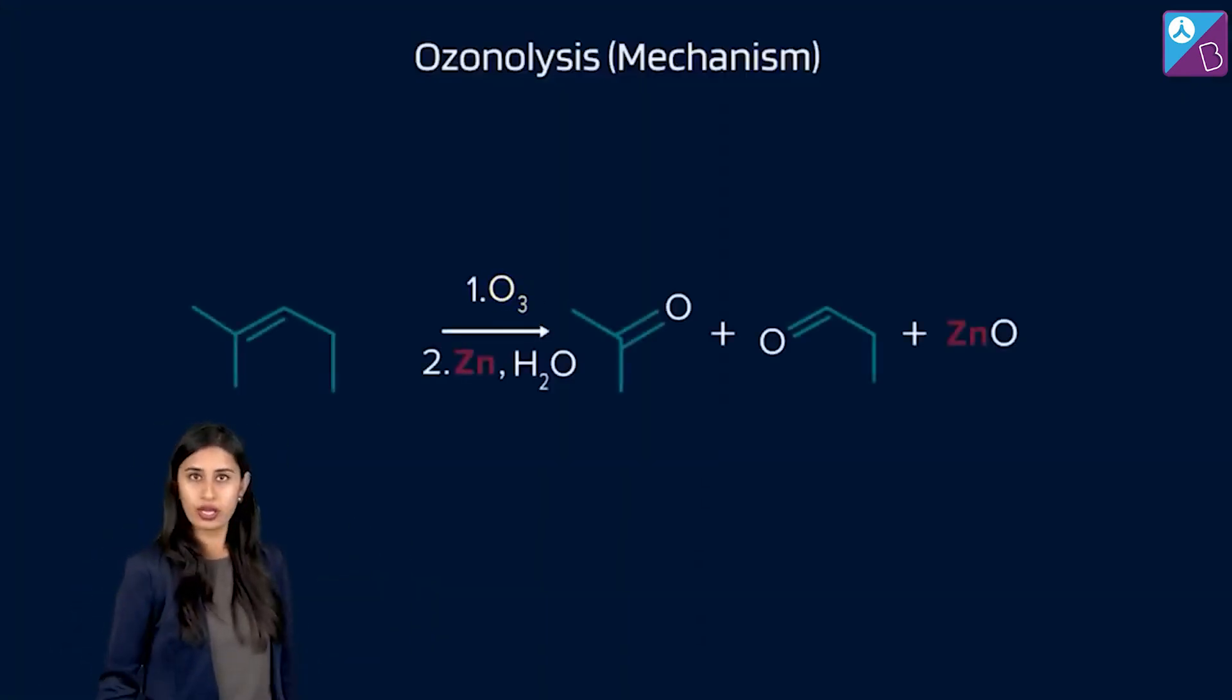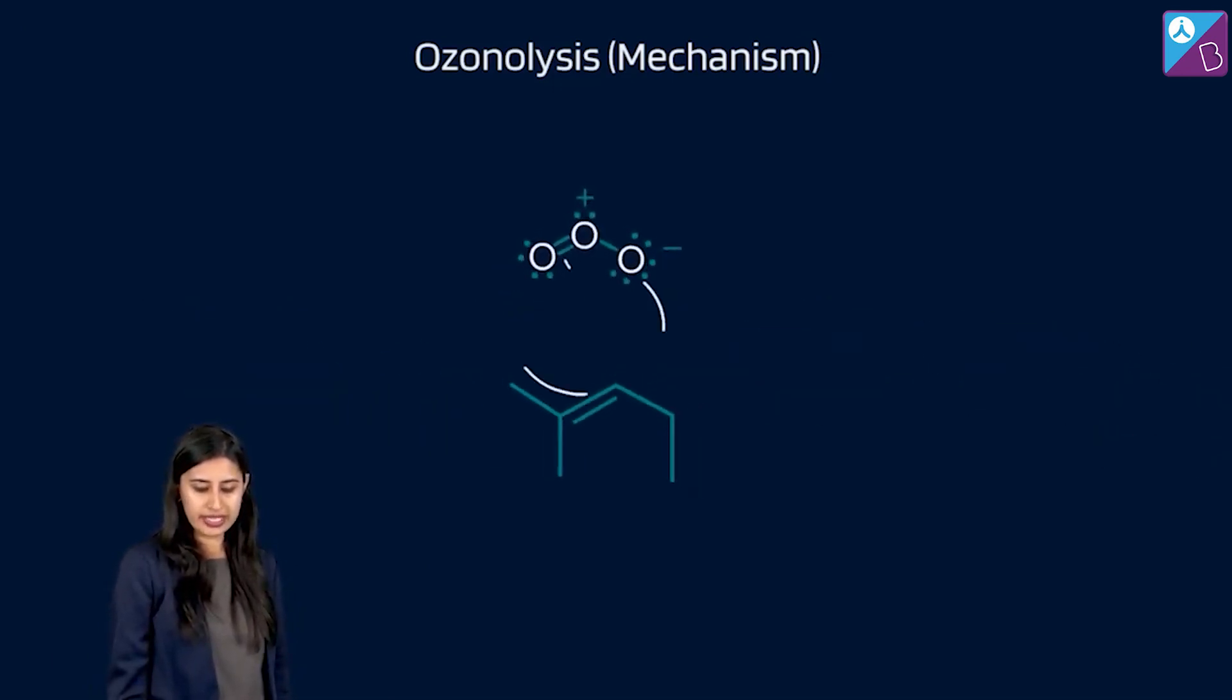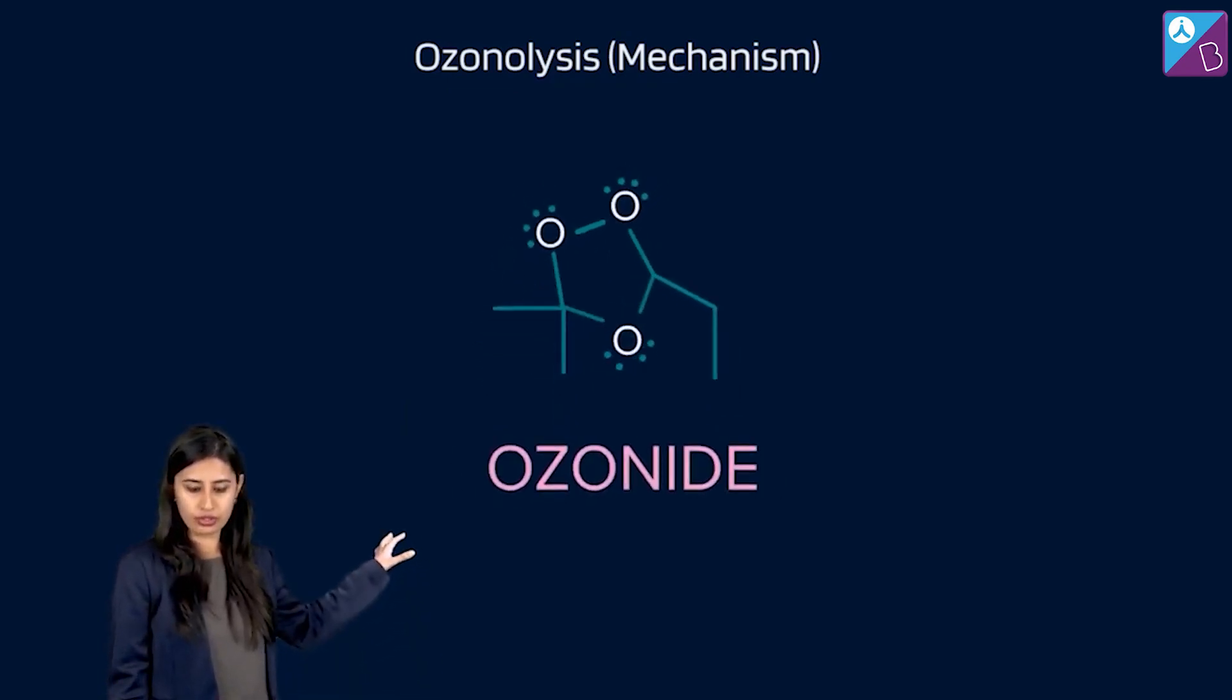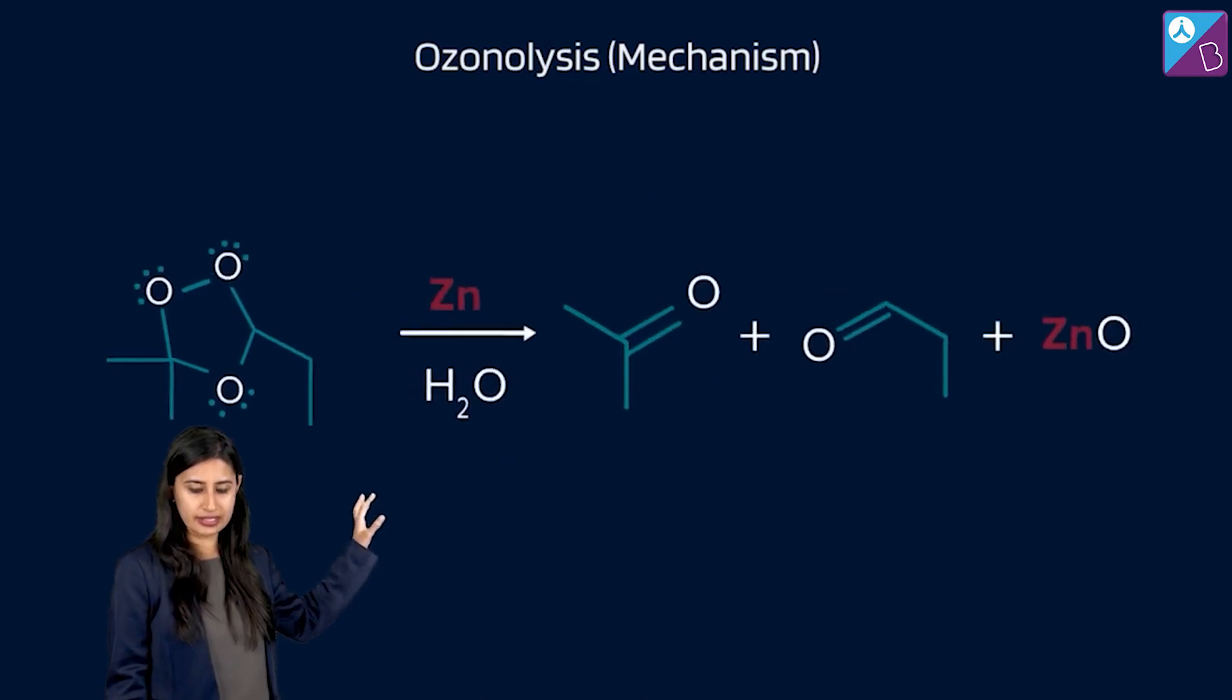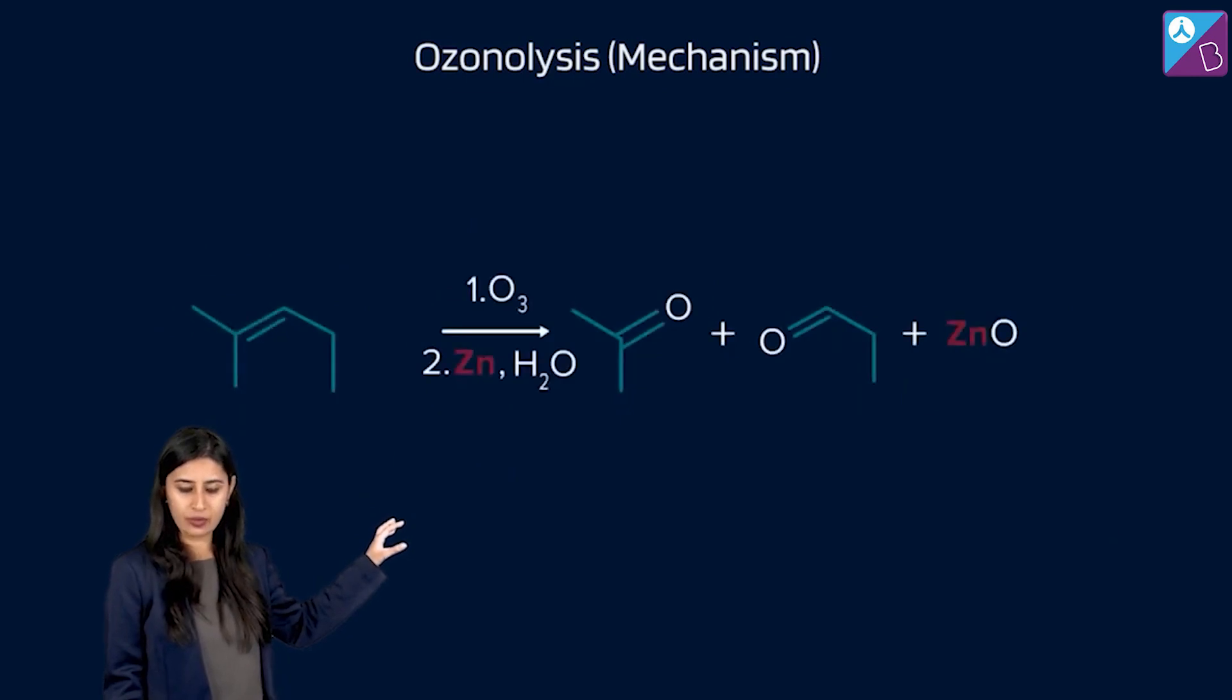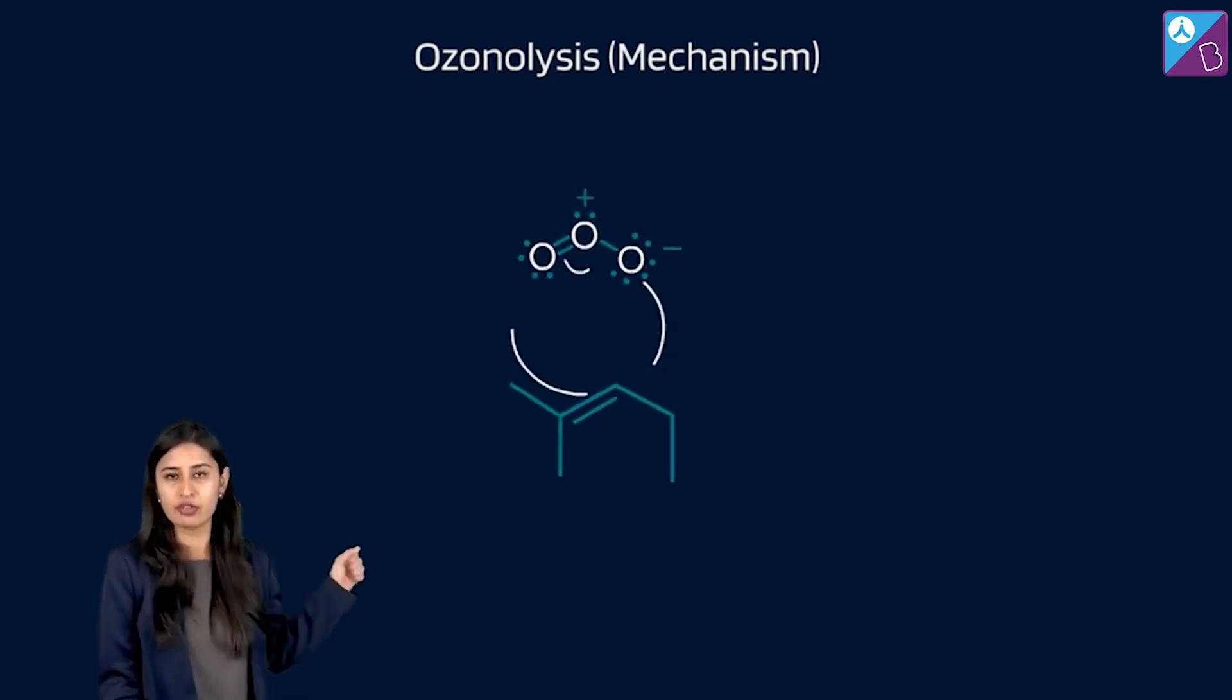In the presence of ozone, you can see a cyclic ozonide derivative being formed. Right? After this, there is some - this is the ozonide. After this, there is addition of zinc water which gives us, please check. We are getting one ketone, one aldehyde. Where to get what is a story to be dealt in few seconds.